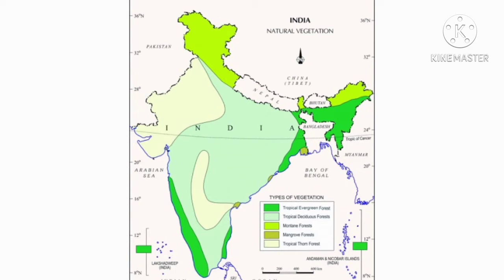Next one, tropical deciduous forest. Light green shade indicates tropical deciduous forest. You can see tropical deciduous forest on the map. These types of forest are also known as monsoon forest.